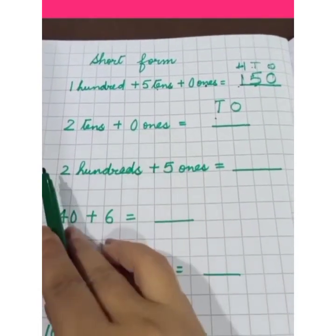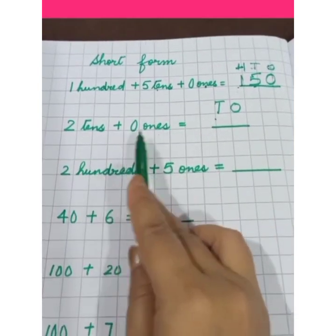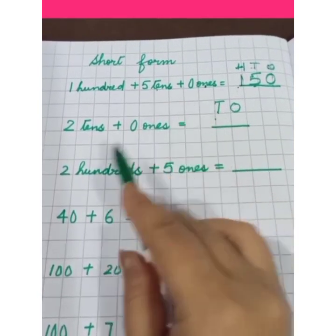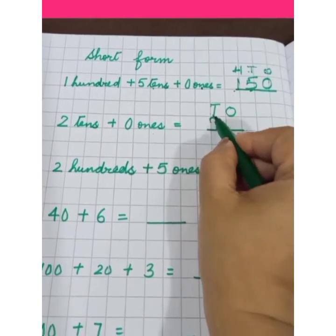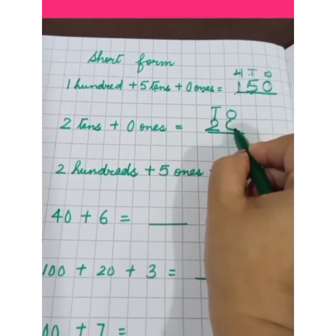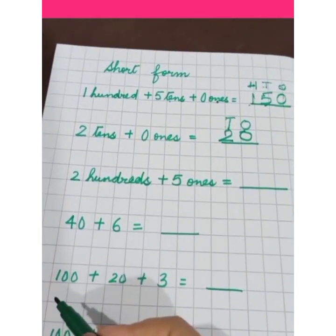2 tens, 0 ones. So only 2 digits, we will make 2 columns of ones and tens. 2 in the place of tens and 0 in the place of ones, the number is 20.